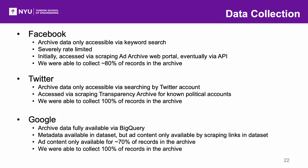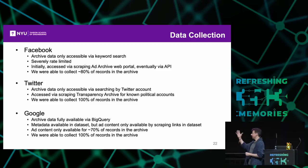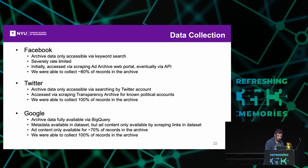However, when we started analyzing the data, we noticed that for a lot of the ads we're missing the actual content—the images and text. It turns out that for Google's ad network, if the ad was originally purchased through a third-party advertiser and then run on one of Google's properties, the content of the ad won't be archived. This is unfortunately a big loophole—if you're running a malicious misinformation campaign, you can easily circumvent Google's archive by simply paying through a third party. The outcome is that we only have the content for about 70% of Google's ads.